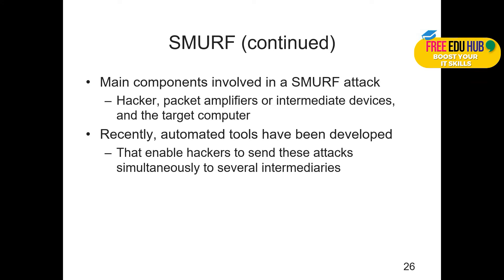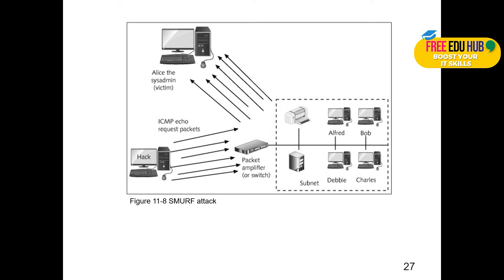Recently automated tools have been developed that enable hackers to send these attacks simultaneously to several intermediaries. The hacker sends ICMP echo request packets to the packet amplifier or a switch. Since all devices are connected to the switch, instead of a single ping directly to the target, the hacker targets the switch and all devices connected to it send a ping to the victim's computer. Imagine how many devices are connected — all of them sending requests to one individual computer.